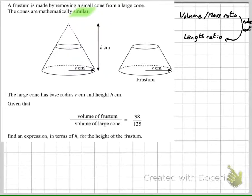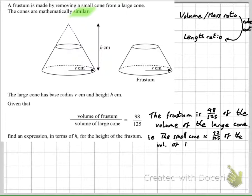Well, the thing to notice is this equation here is actually telling us this: the frustum is 98/125ths of the volume of the large cone. And therefore, the bit that's missing, the bit that would take this 98 up to 125, is 27/125ths. And that must be the small cone's volume compared to the large cone. In other words, the small cone is 27/125ths of the volume of the large cone.